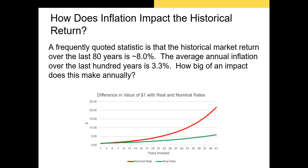Let's take a look at how big an impact inflation has on the purchasing power of investors historically. The historical market return over the last 80 years has been about 8%. The average inflation over a similar period is about 3.3%. I've taken the nominal value of $1 invested for 40 years — earning a nominal rate of 8%, that dollar appreciates to something like $22. However, after we account for inflation using the Fisher equation, that $1 only appreciates to about $6. Inflation makes a massive difference.